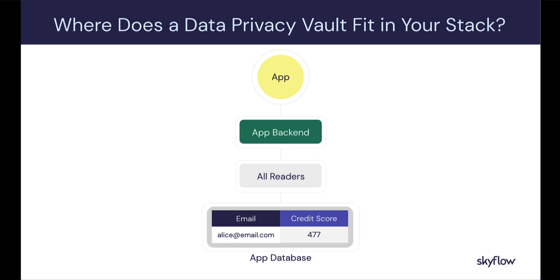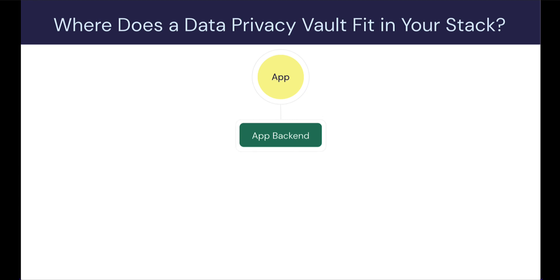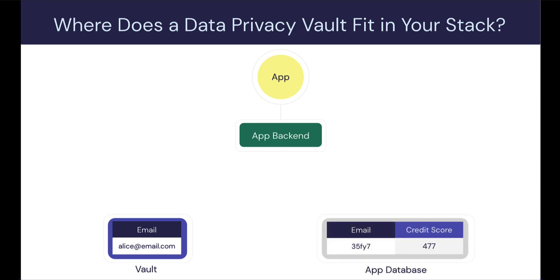In terms of an application stack, if we take a simple example without a data privacy vault — we have a back end with some security fencing, but once you're within the perimeter everyone has access to the database, so everyone can see alice@email.com and her credit score. When we introduce the vault, we move the sensitive data like alice@email.com into the vault, and within the application database we store a pointer or token as a representation. The token holds no exploitable value, isolating and protecting Alice's email while removing the liability from our regular application stack.